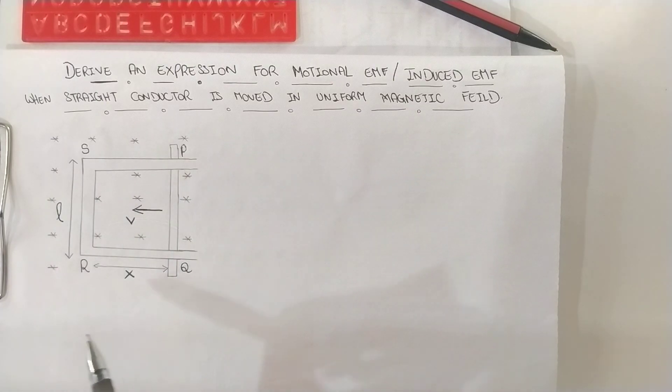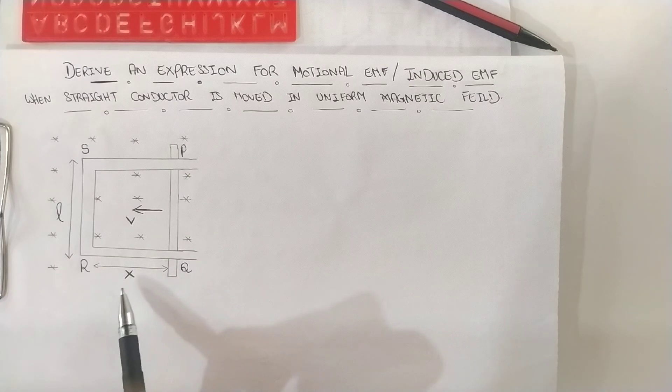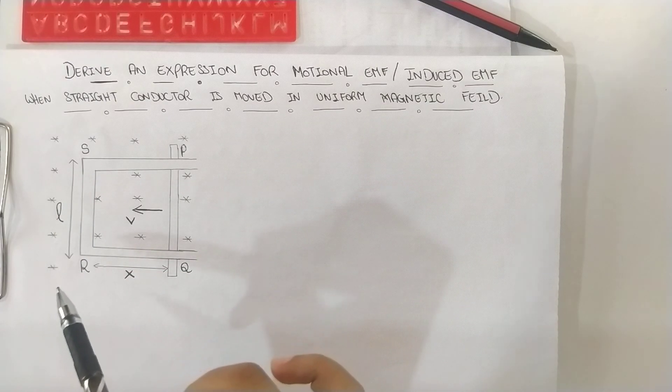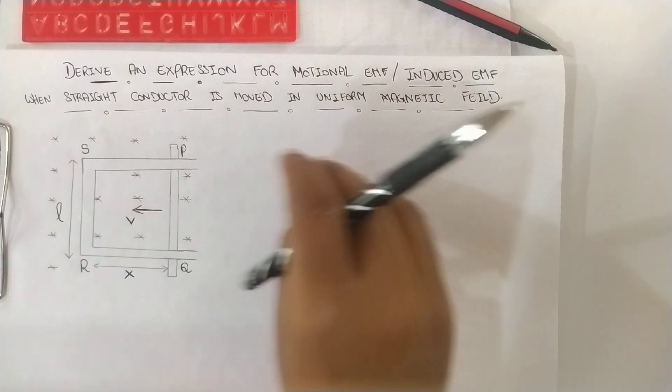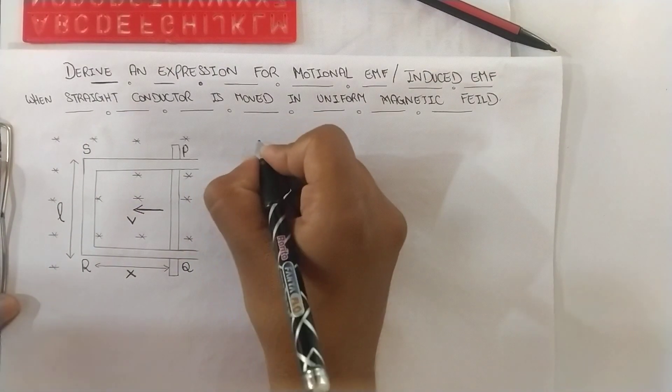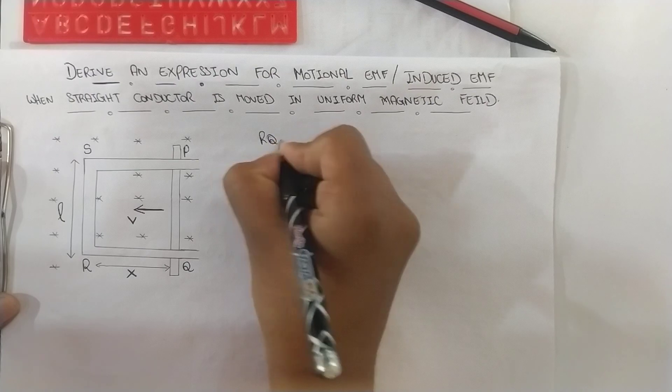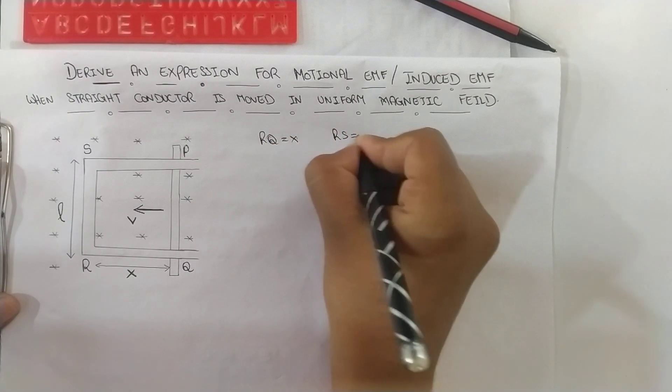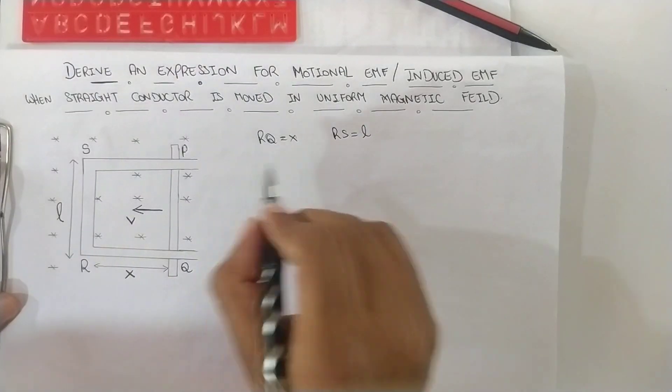And dimensions of this rectangular conductor is RQ, that is the breadth with dimension X, and RS, the length with dimension L. Now let me write these things here. RQ is X and RS is L. This is the dimension.